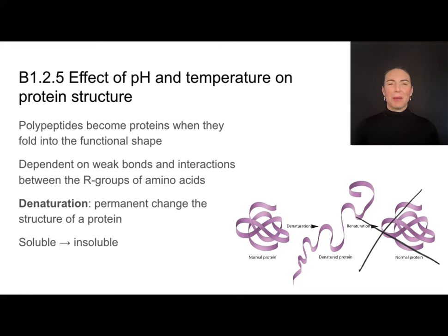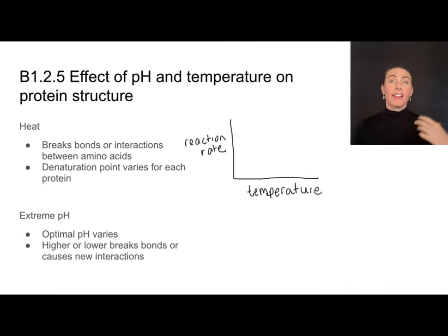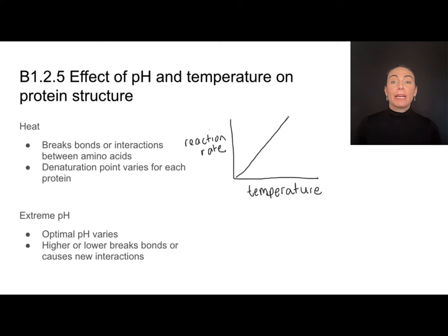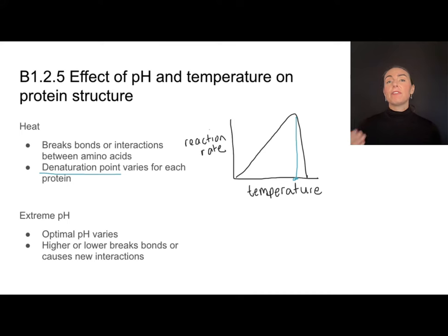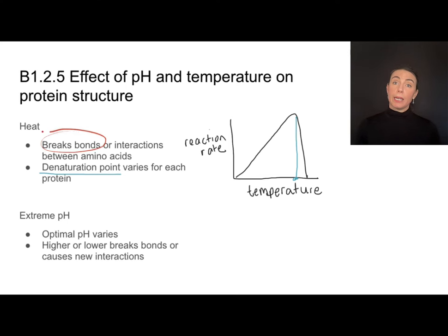We'll look at this with things like blood clotting and other examples. There are two things that can cause denaturation. If I have a protein responsible for catalyzing a reaction, as temperatures increase, that reaction rate goes up — the protein becomes more active. But at a certain temperature, that reaction rate falls very drastically. That's the denaturation point, at which the protein starts to unravel and change its shape, becoming non-functional. This can vary from protein to protein, but all proteins have a denaturation point. High temperatures cause this by breaking certain bonds between amino acids.